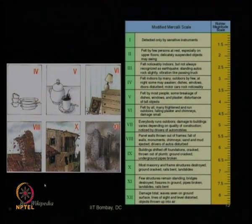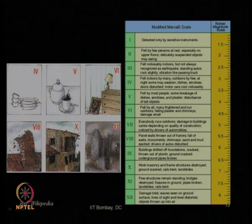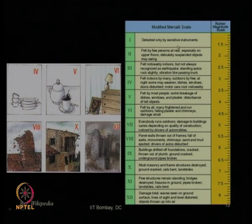This is a typical representation of the modified Mercalli scale. From modified Mercalli scale intensity of 4 to 12 is shown, because below 4 it is almost not felt by the observer. You can see various types of damages mentioned in this table corresponding to MMI scale of 1 through 12, along with a corresponding correlation with the Richter magnitude scale. Intensity scale corresponds to what typical Richter magnitude scale can be correlated with.